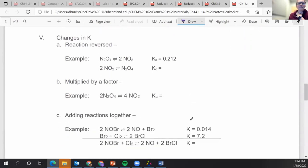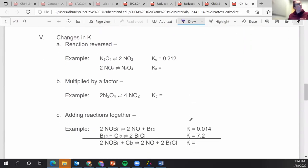So the last thing I want to talk about before we do some examples are changes in K. Essentially, if you know the K value, the equilibrium constant for a specific reaction, you actually know the K value for the reverse reaction. And it's actually the inverse.